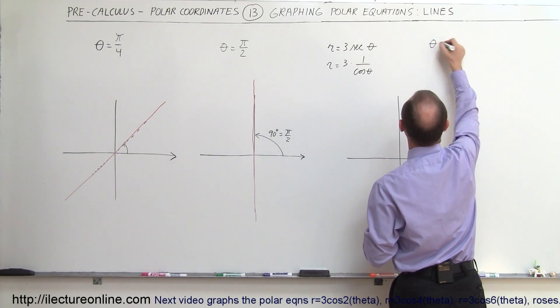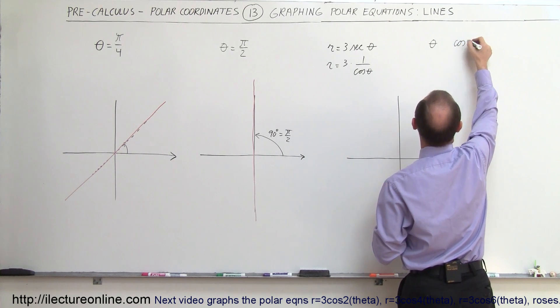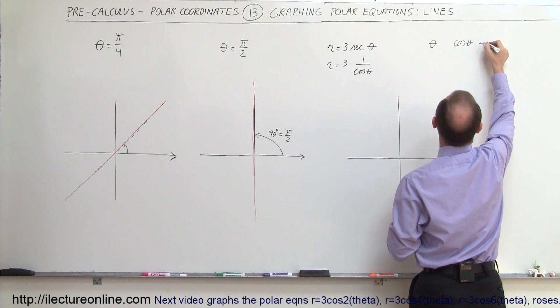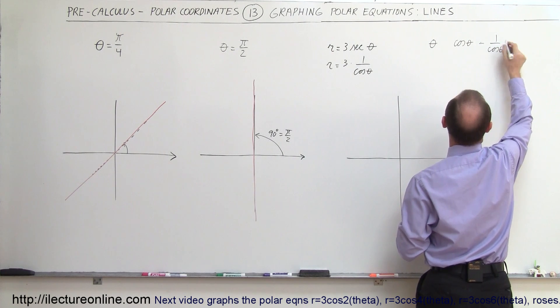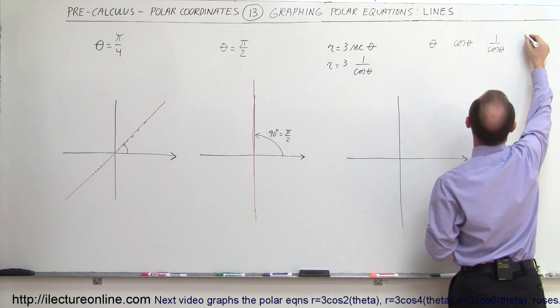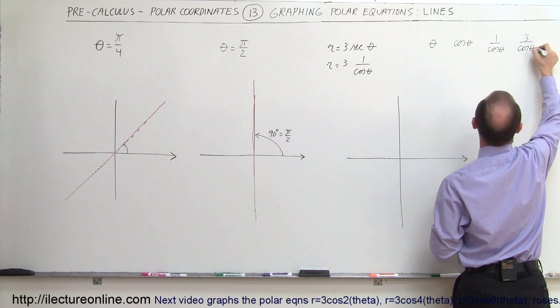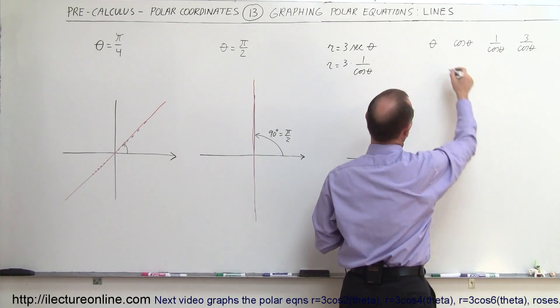So for example, if we have theta, then we have the cosine of theta, then we have 1 over the cosine of theta, and then we have 3 divided by the cosine of theta. Let's see what we end up with for some different values.